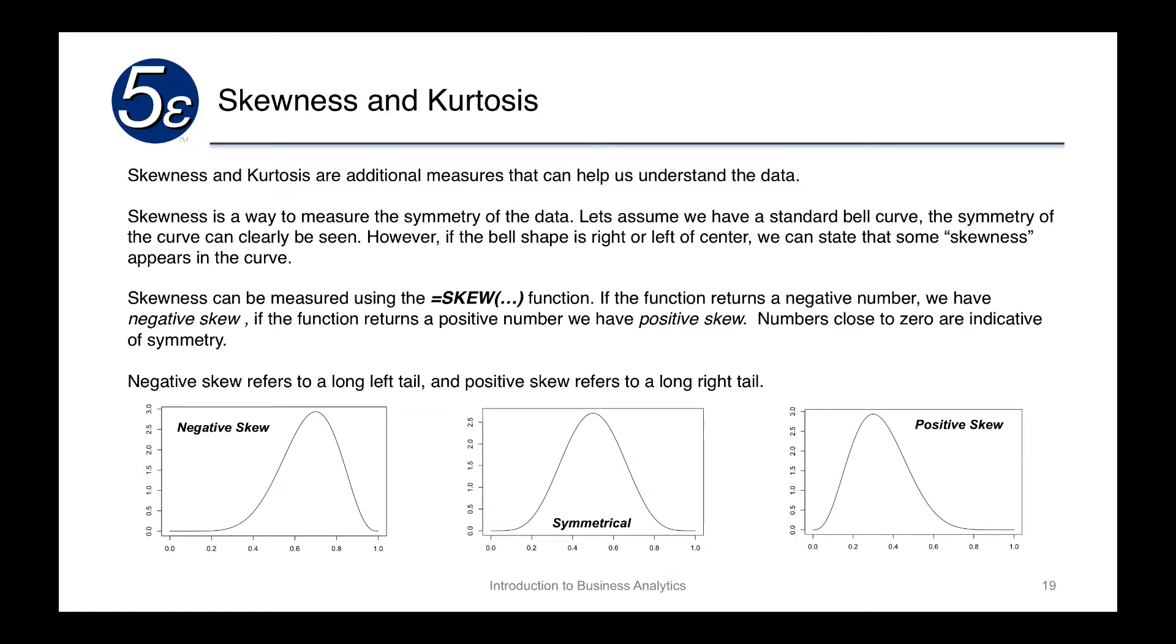Now another main concept is the skewness and kurtosis. Skewness and kurtosis basically help us understand a little bit about the normal distribution, the normal distributed curve. It's a way to measure symmetry of the data.